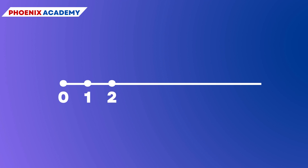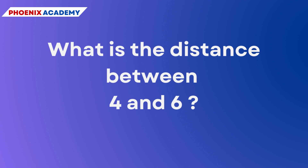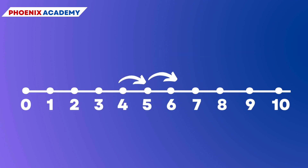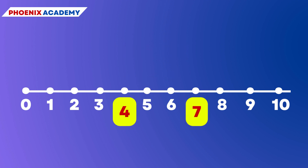On this line, mark a point to the right of 1 at a unit distance from 1 and label it 2. In this way, go on labeling points at unit distances as 3, 4, 5, etc. You can go to any whole number on the right in this manner. The distance between 4 and 6 is 2 units. We also observe that the number 7 is to the right of 4, so 7 is greater than 4.